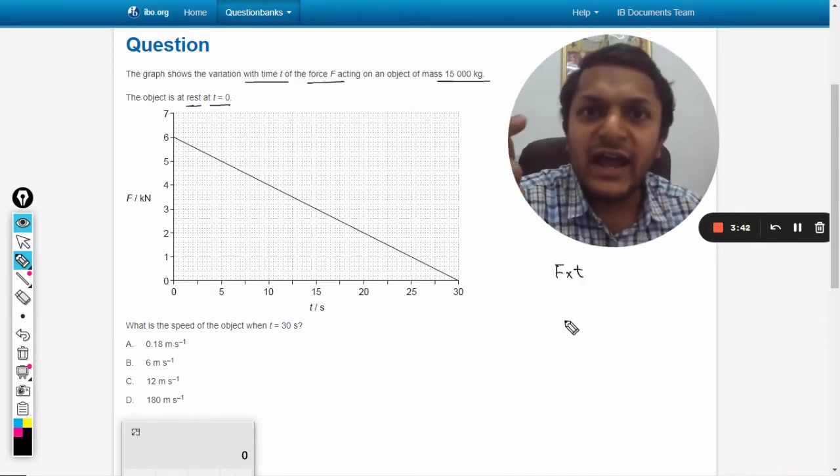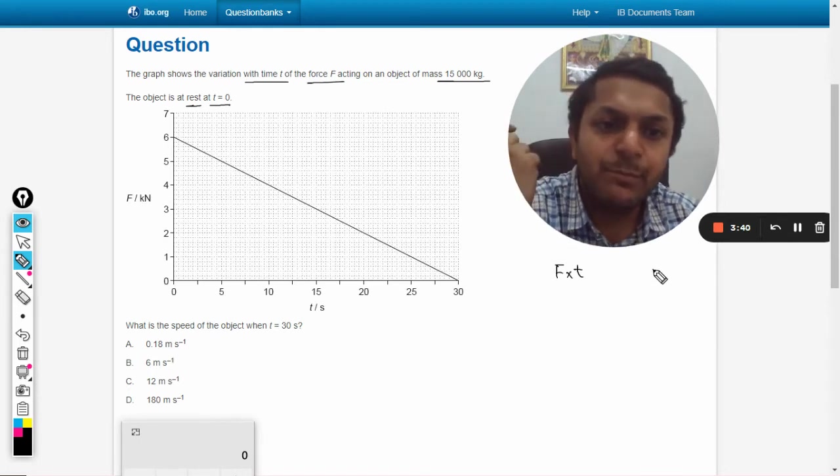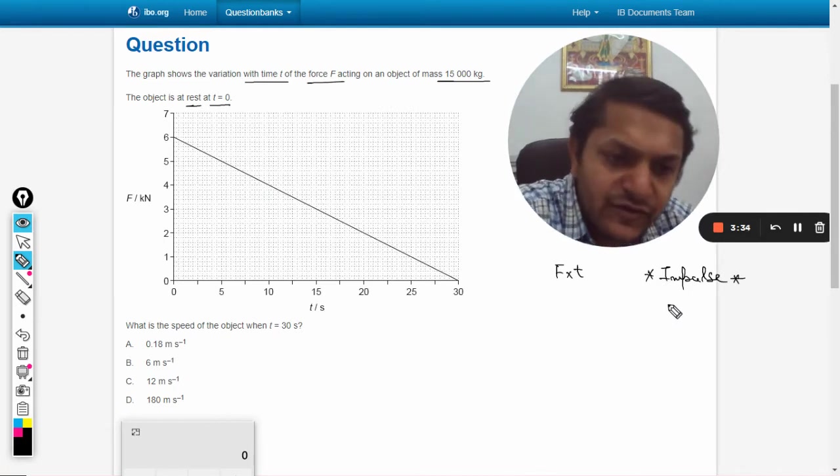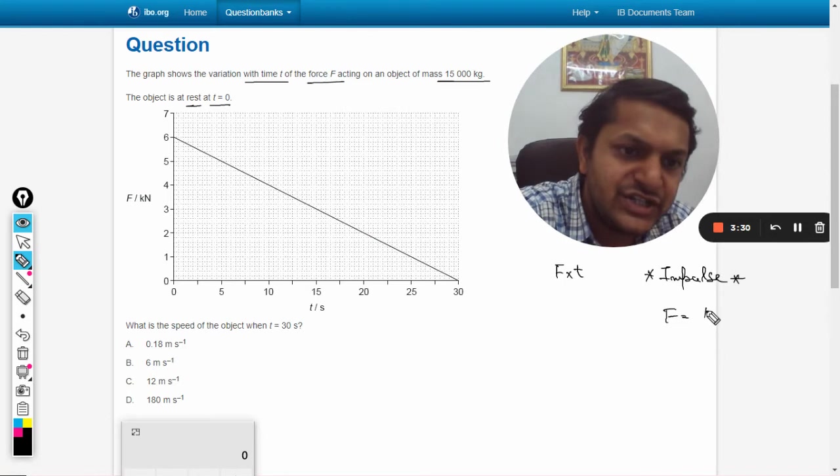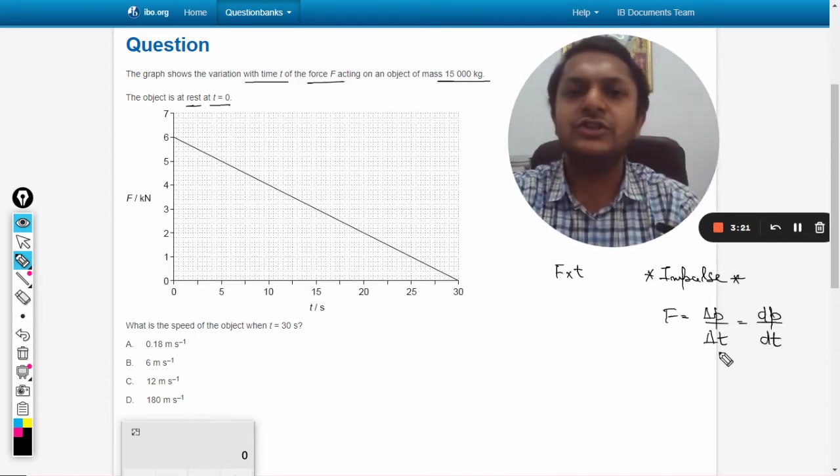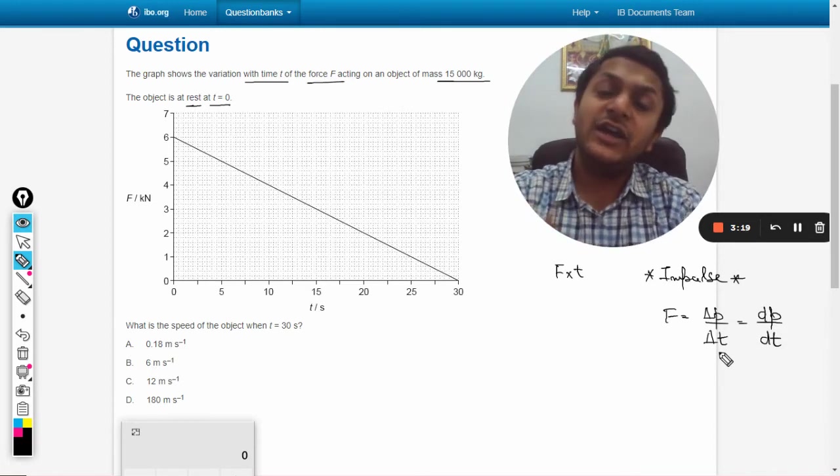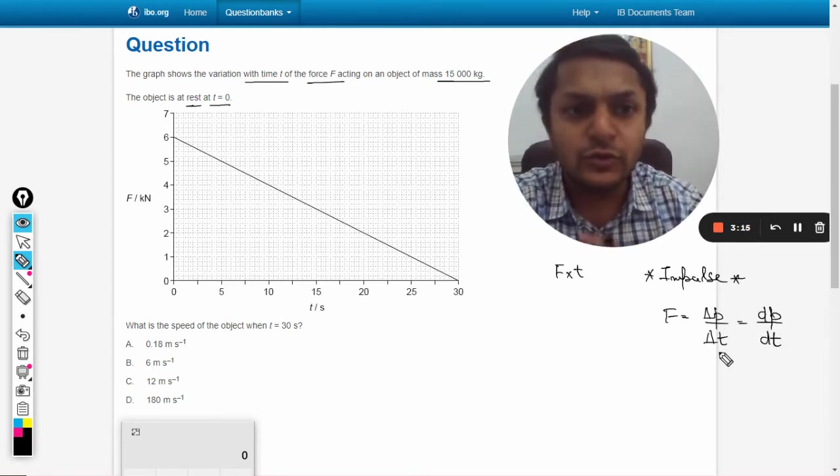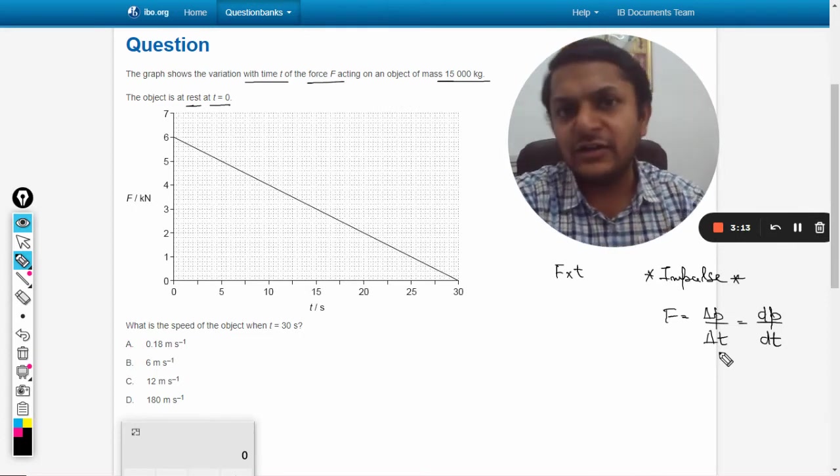What is impulse? We know that F is equal to change in momentum delta p by delta t. But when time is very very small, we can write it as dp by dt, which is differential terminology. You might not be knowing it if your teacher has not dealt with it, so we can work around with delta also.